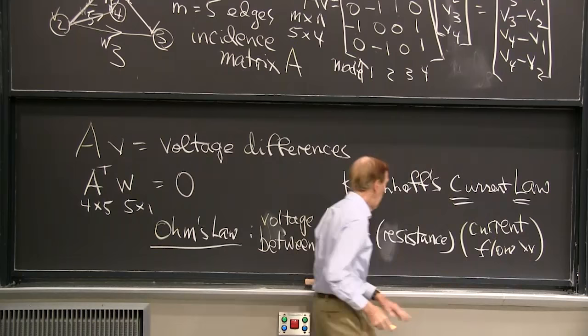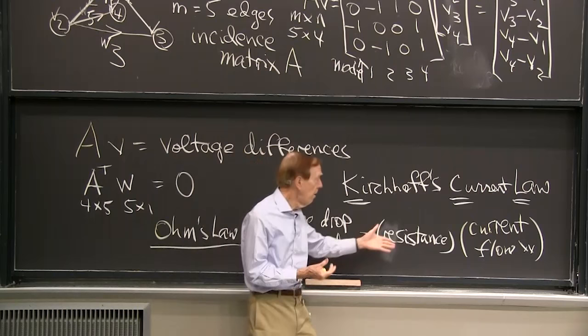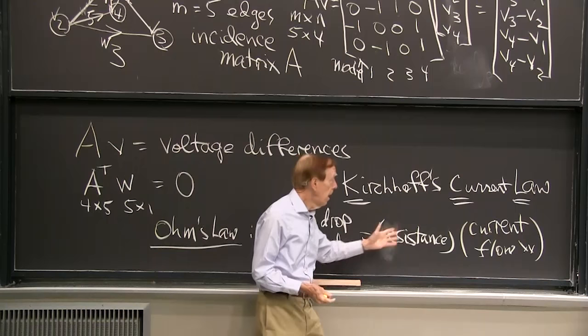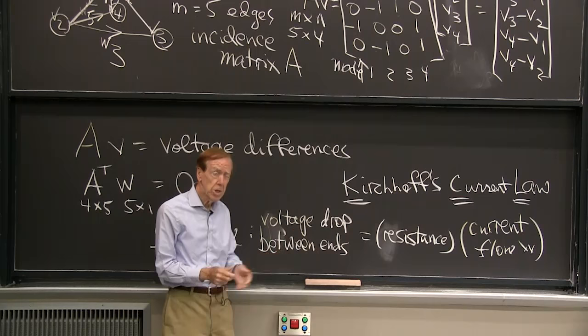Well, so E equal IR is some resistance times the flow, times the current flow, W. OK. So a difference in V's is some number. This is the physical constant that we have to measure in a lab to know how many ohms our resistor is. That equation is on each edge. So we have a bunch of equations. And together they tell us the four voltages and the five currents.